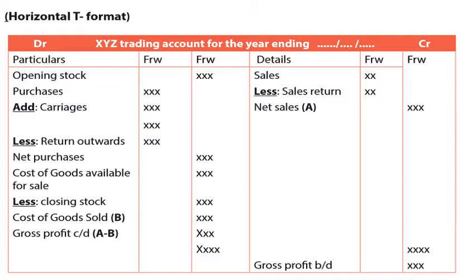On the credit side, we get sales, less sales returns, to arrive at net sales. To get gross profit we calculate net sales minus cost of sales (B). Your trading account must balance — when you add gross profit plus the cost of sales on the credit side, it should equal the total on the debit side.